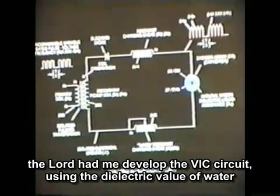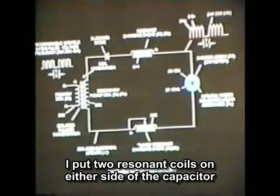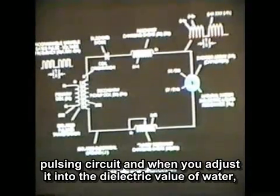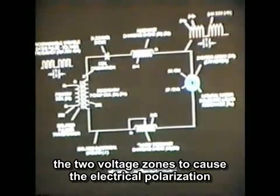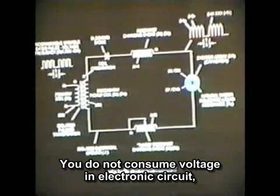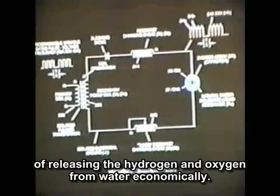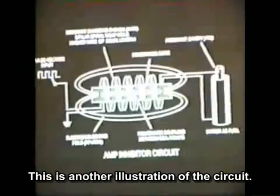The electrical polarization process led me to develop the BIC circuit, using the dielectric value of water as part of the electronic component of the circuit. I put two resonant coils on either side of the capacitor, which is formed by two voltage zones and the dielectric liquid of water. This became a tuned pulsing circuit. When you adjust it into the dielectric value of water, you allow the voltage across the two voltage zones to cause electrical polarization to separate the water molecule in a strictly physical manner. You do not consume voltage; by restricting current flow, you have a very economical way of releasing hydrogen and oxygen from water.